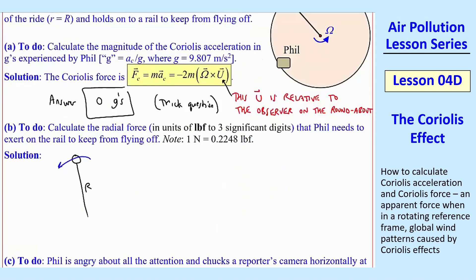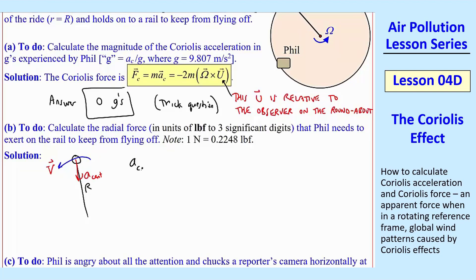Part B, let's calculate the radial force in units of pound force that Phil needs to exert on the rail to keep from flying off. So this is actually a centripetal acceleration. So the acceleration, a centripetal, is towards the middle in any object that's rotating in a circle like that with some radius of curvature R. So the speed here is V, and he's moving like that. So A centripetal, and we're just doing the magnitude of it, it's towards the center, is from your high school physics, V squared over R.